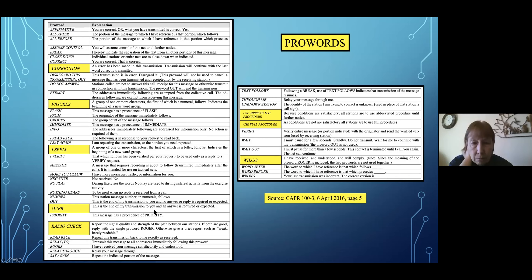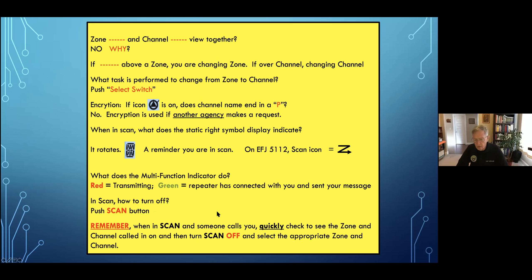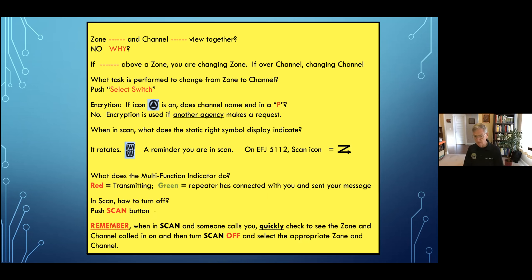Question: on encryption, that could be on any of our channels? Yes. If say FEMA or Washington State Department of Transportation, in a unified command, has something specific and says 'please go encrypted,' that's when you would move to the zone and channel they specify and go encrypted.